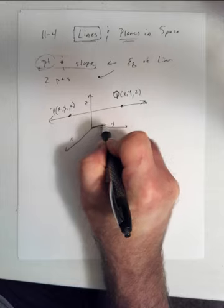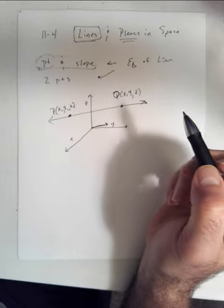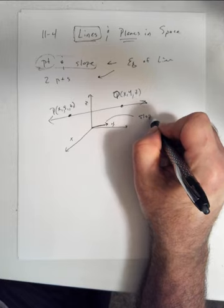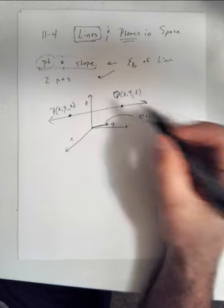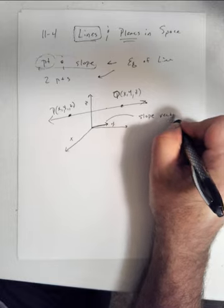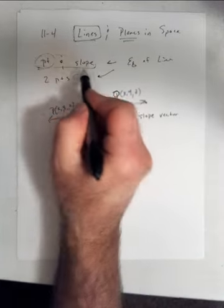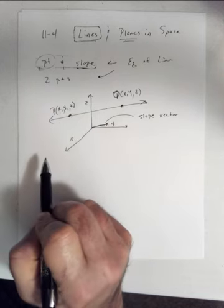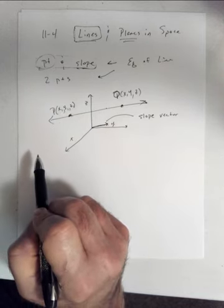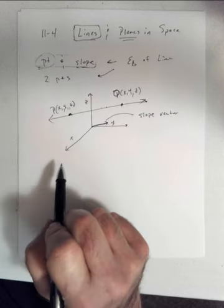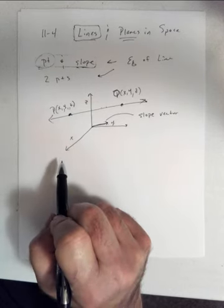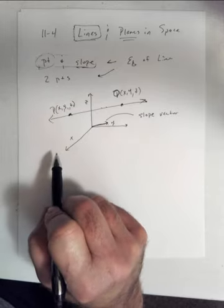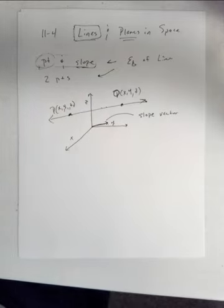So instead of a traditional slope, we use what I call a slope vector — they'll call it the directional vector — a vector that is parallel to your line. We have a point in space and a slope vector that must be parallel to the line. Because they're parallel, they have the same direction.